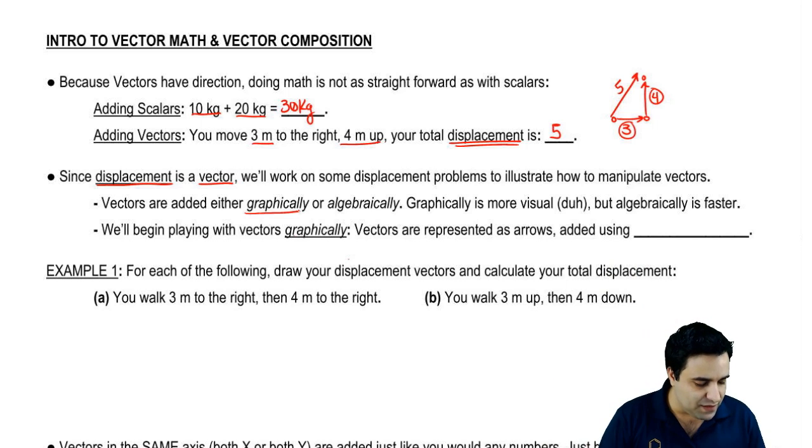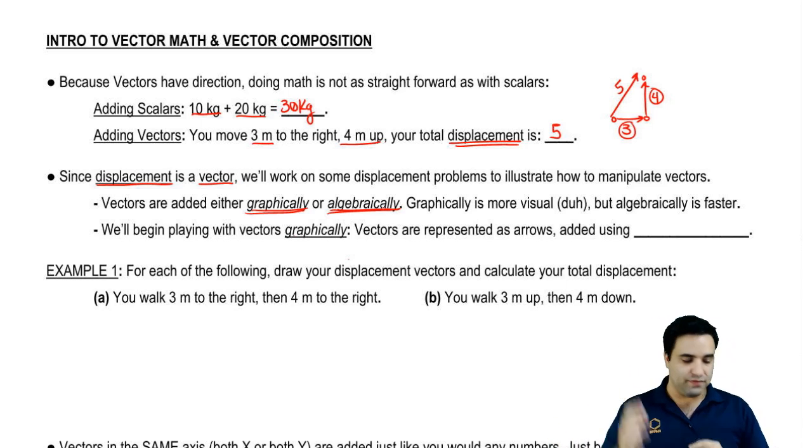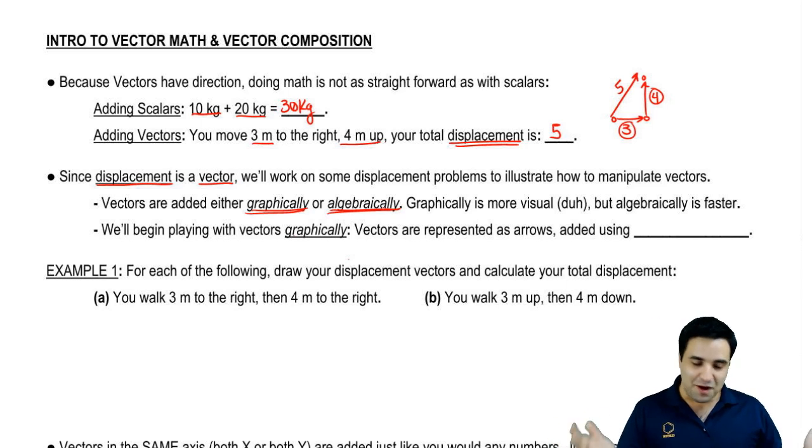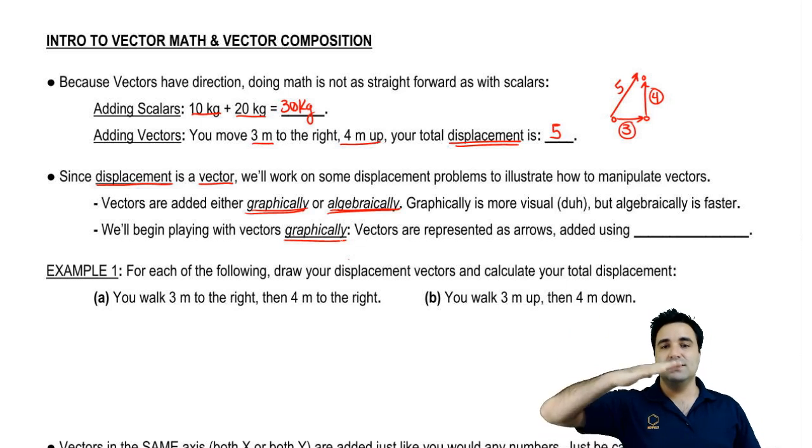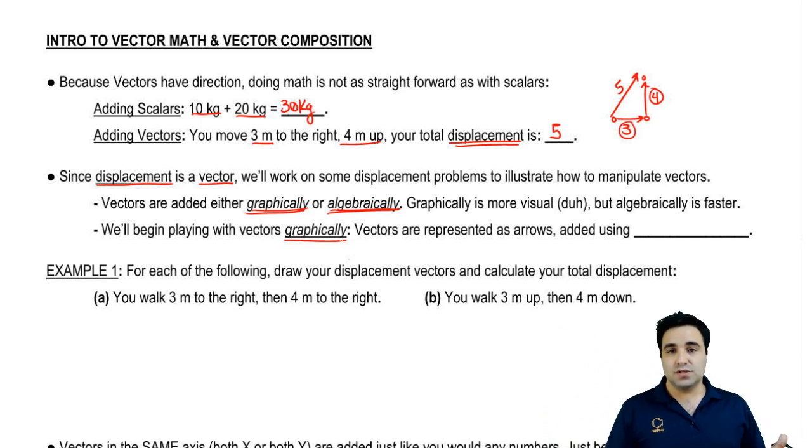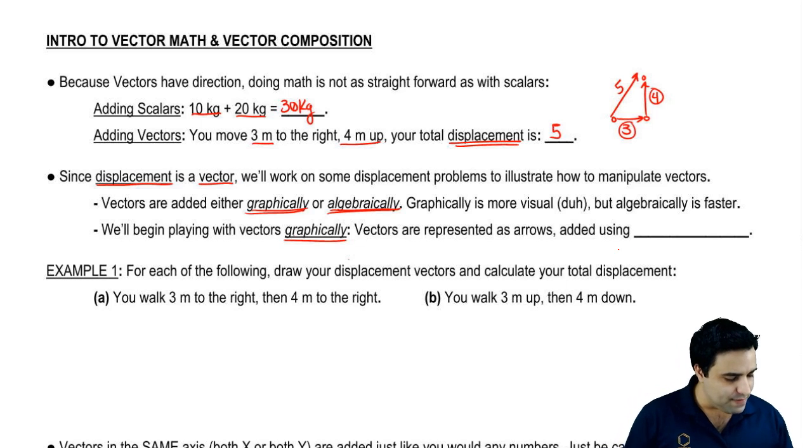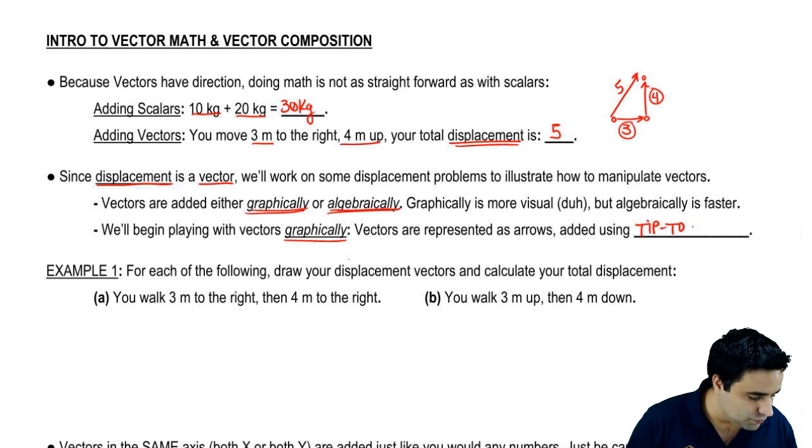They can be added either graphically, visually, or algebraically, which just means it's numbers rather than with a graph. Graphically is more visual, obviously, but algebraically could be faster. We're going to do a lot of graphical stuff first, then I'm going to show you the algebra way of doing it. We're going to begin playing with them graphically. Vectors are represented as arrows.